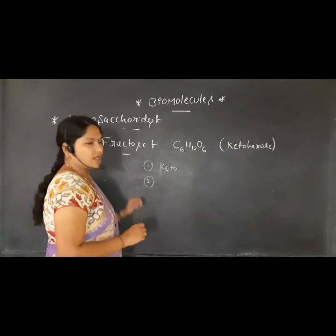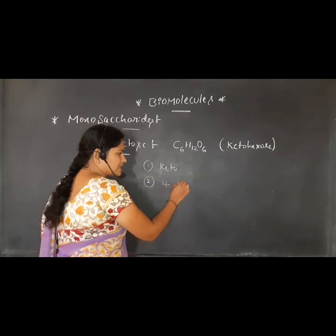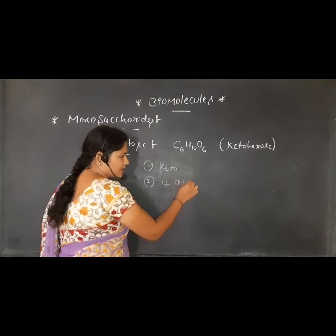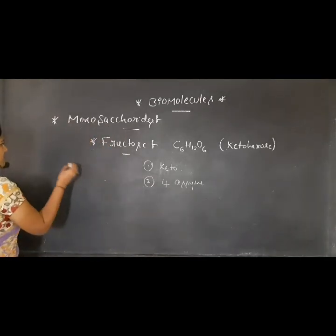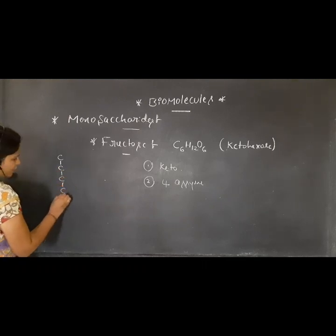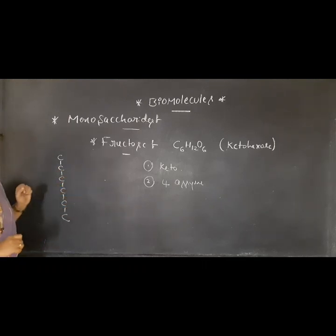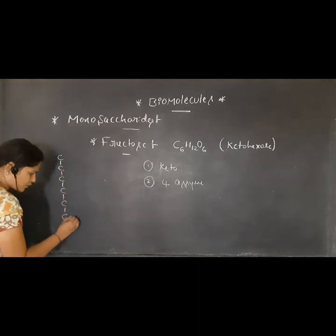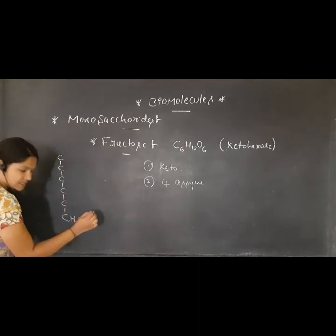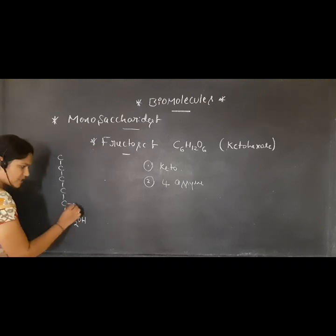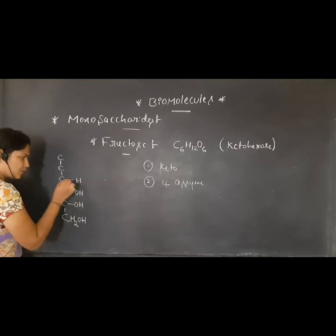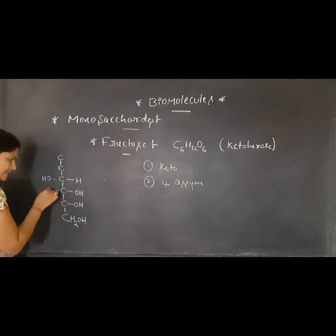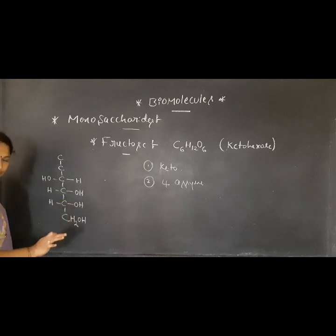Glucose contains four asymmetrical centers — four achiral carbon atoms or four asymmetric centers — whereas fructose has only three. To explain all these things, we need the help of the structure of glucose. Let me write the structure of glucose again. We have six carbon atoms. From the bottom: CH2OH at the bottom, then OH, OH, and H. Up to this point, the structure is the same as in glucose.